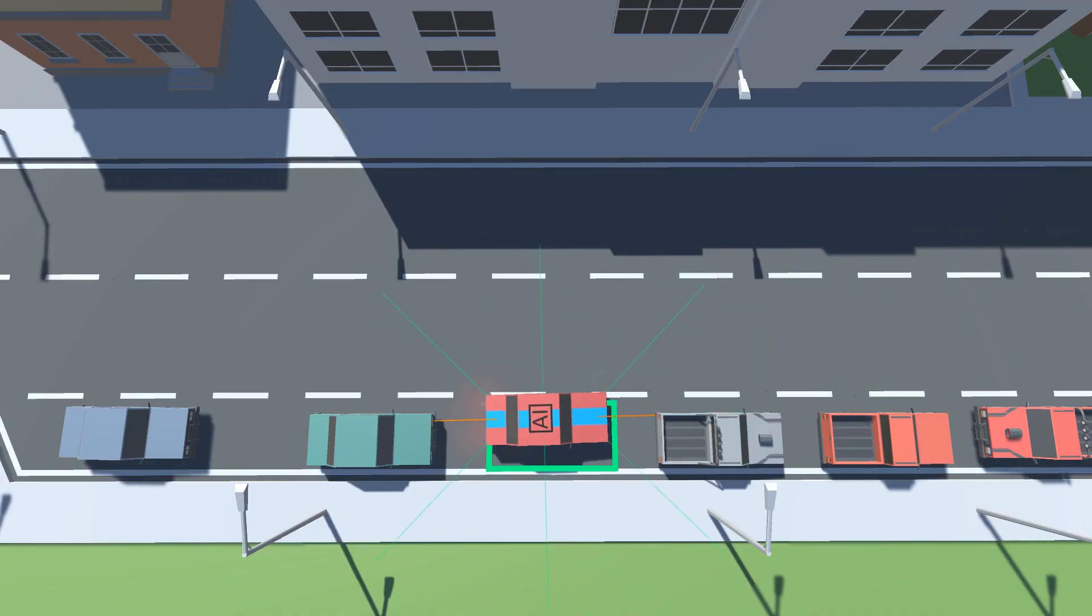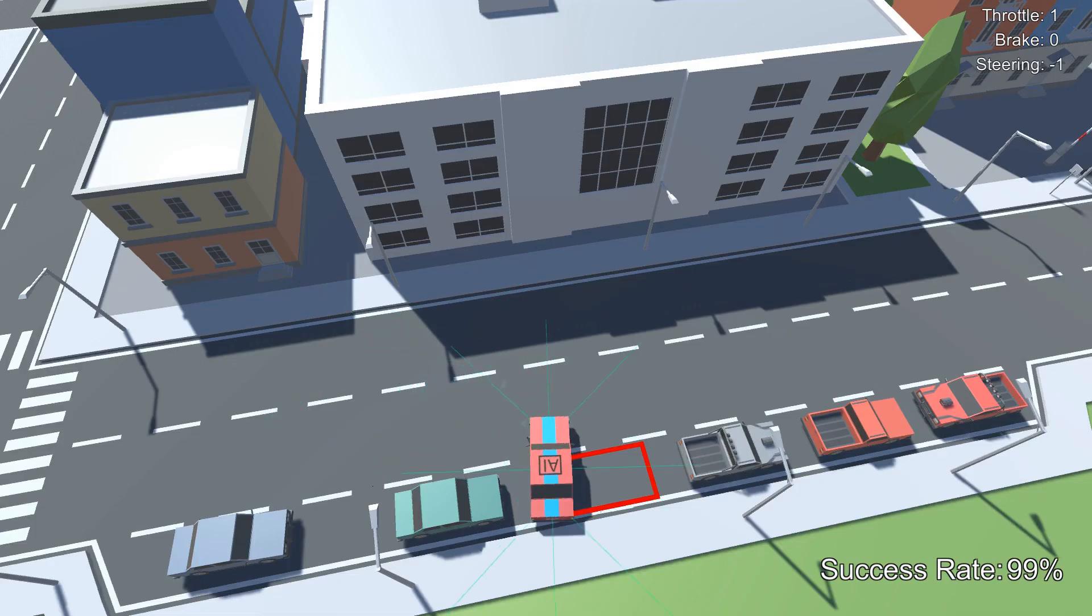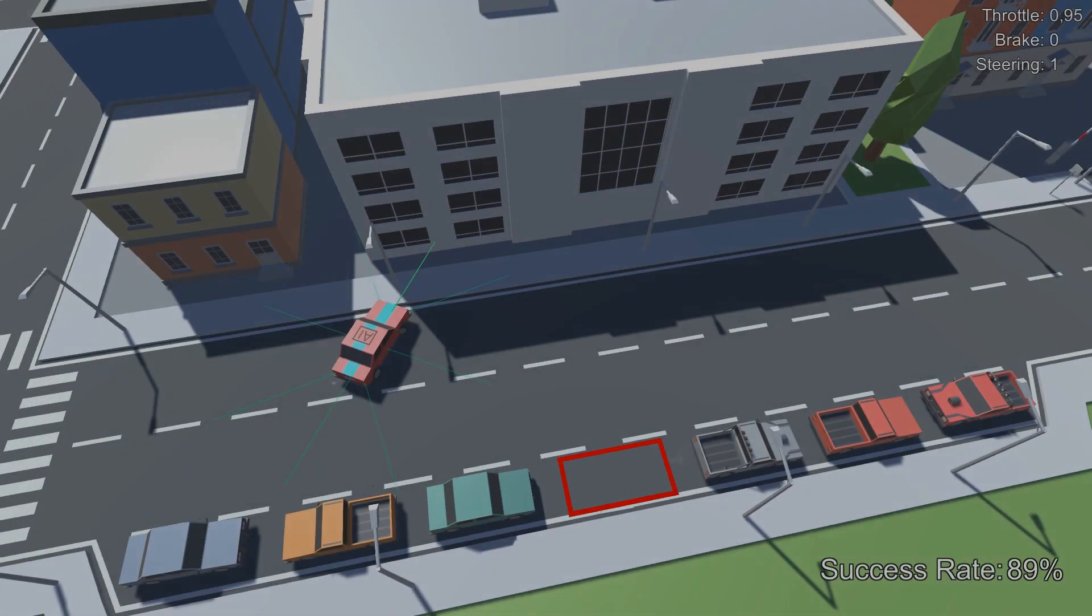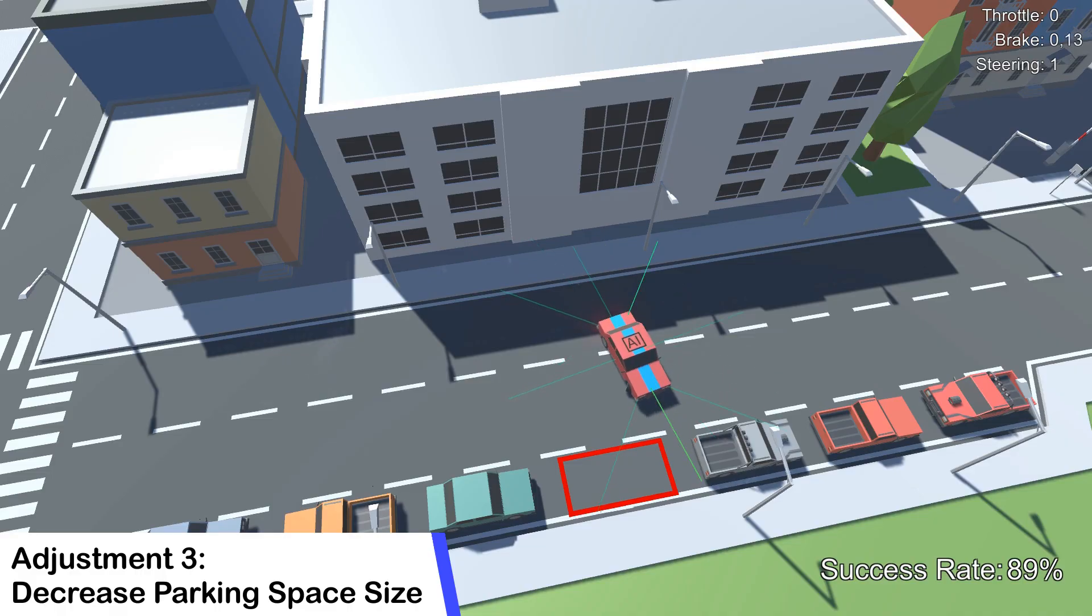I think some of these results looked good enough to now be able to actually increase the difficulty for the agent. I mean have a look at this reverse parking. I think that's actually impressive. I started decreasing the parking space again and I think the agent was actually able to cope with that quite well.